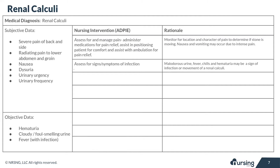Next in your assessment, you want to be looking for signs and symptoms of infection. We're assessing the patient and looking for things like malodorous urine, fever, chills, and hematuria.